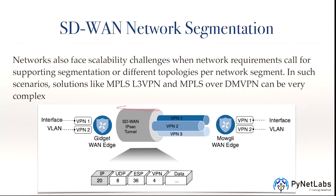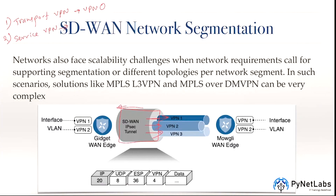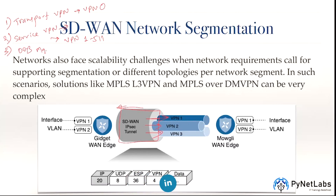Inside this IPsec tunnel, there can be different VPN segments considered as service VPNs. There are three types of VPNs in your SD-WAN fabric. First, it's Transport VPN, which is VPN number zero. Second, it's Service VPN, which can be any VPN between one and 511. Third, it's the out-of-band management VPN, which is VPN number 512.